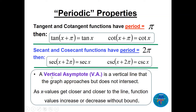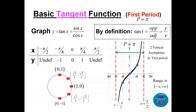In these four functions we will see something called a vertical asymptote (VA). It is a vertical line that the graph approaches but does not intersect, so as x values get closer and closer to the line, the function values increase or decrease without bound. We will see some examples to explain vertical asymptotes.